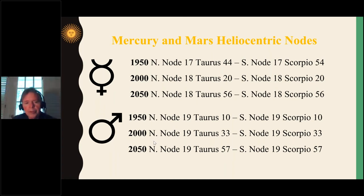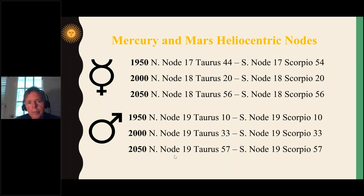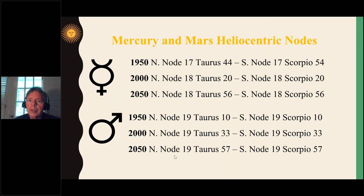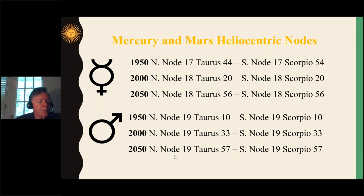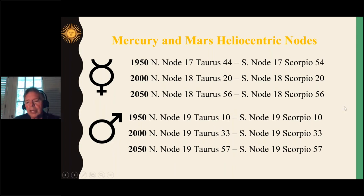Mars was at 19 Taurus 10 in 1950 for the north node, and 19 Scorpio 10 for the south node, with further positions shown for 2000 and 2050. When looking at these heliocentric nodes, first consider the sign — Taurus is always going to be Taurus in some way, Scorpio always Scorpio. But then you add something that tweaks that degree a little: in this case, Mercury and Mars. Let's go ahead and look at some examples.